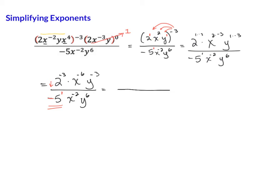So we're going to move the 2 down, and that makes it 2 to the positive 3. We're going to leave the negative 5 down here, and then we're going to move some more things. This x negative 2, I'm going to move up, and that makes it positive.